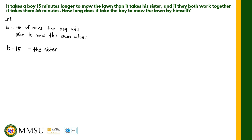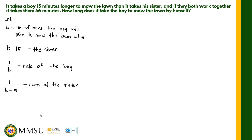If b is the number of minutes the boy takes to mow the lawn alone, his rate is 1 over b. The rate of the sister is 1 over (b minus 15). Since they work together and finish in 56 minutes, our working equation is: (1/b + 1/(b−15)) multiplied by 56 equals 1.